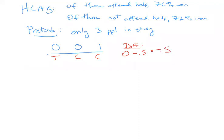So far, all I've done is summarize the data. But now we're going to do the hypothesis test. We have to assume a null hypothesis. Our null hypothesis is that there is no impact of offer of help from H-Lab on the outcomes. Our assumption is that whether you're offered help from H-Lab or not has nothing to do with your outcomes.